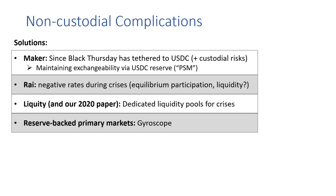One further solution is to build new reserve-backed primary markets, which we'll touch on further in the remaining parts of this presentation in how we've designed the new Gyroscope mechanism.